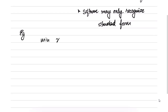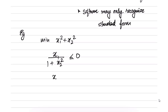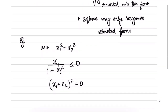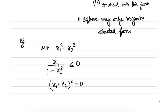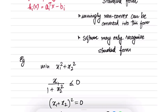Let's take an example. Consider the problem: minimize x1 squared plus x2 squared, subject to x1 divided by (1 plus x2 squared) less than or equal to 0, and x1 plus x2 squared equal to 0. By our definition this is not in standard form, and we could even say it is non-convex, because the equality constraint is not affine and the inequality function is not convex.